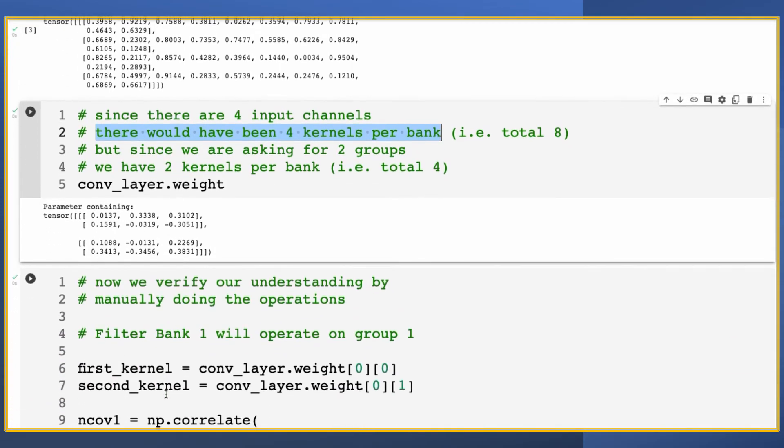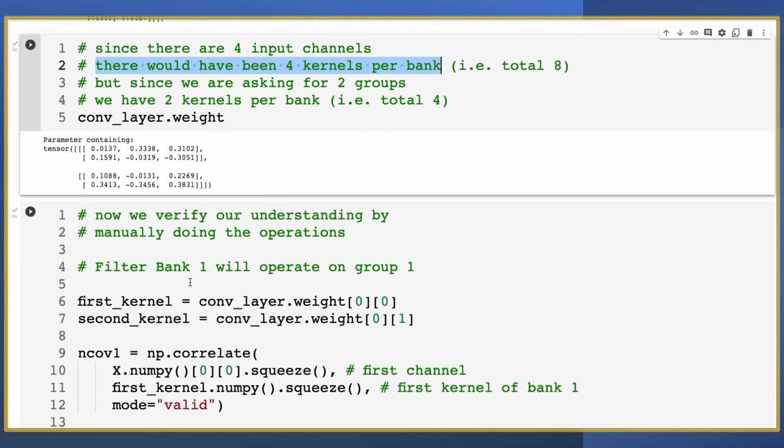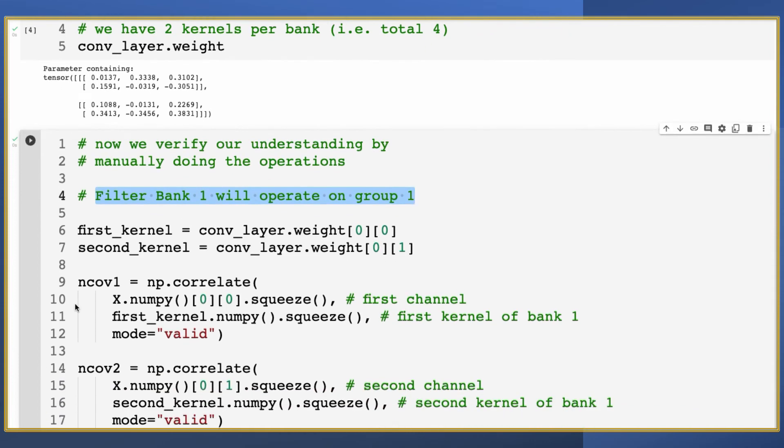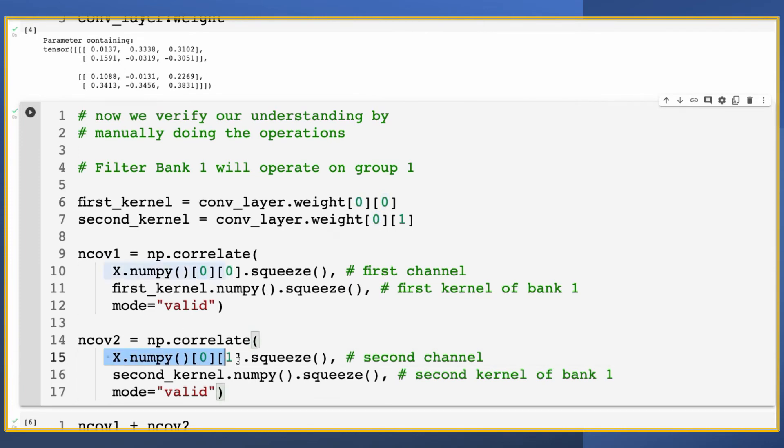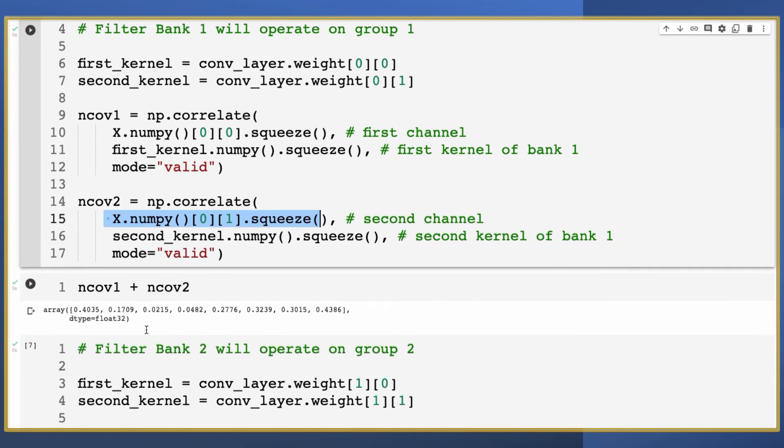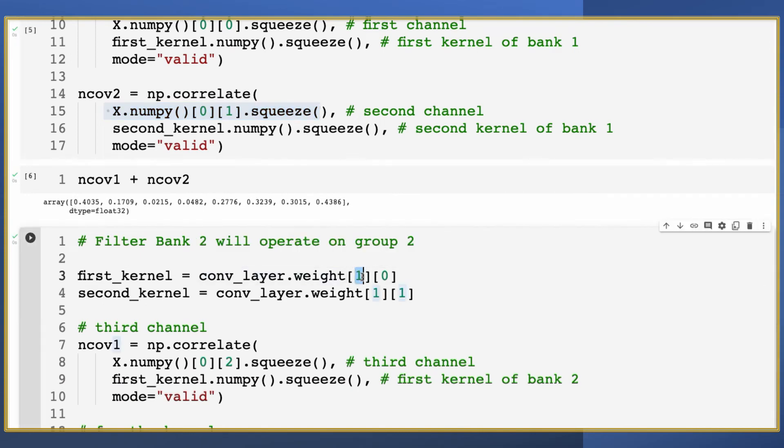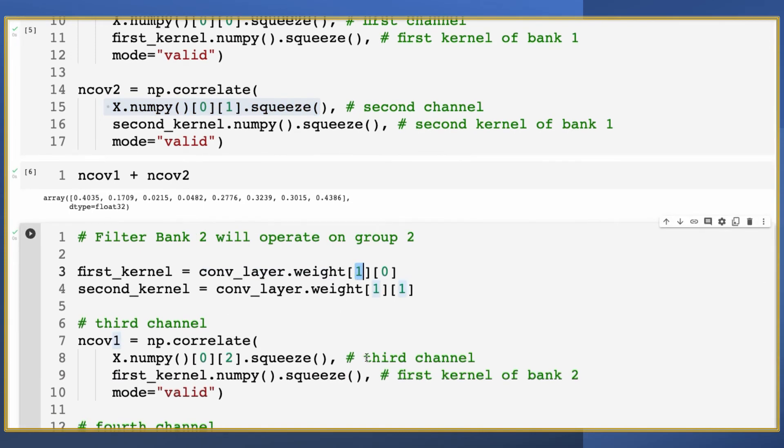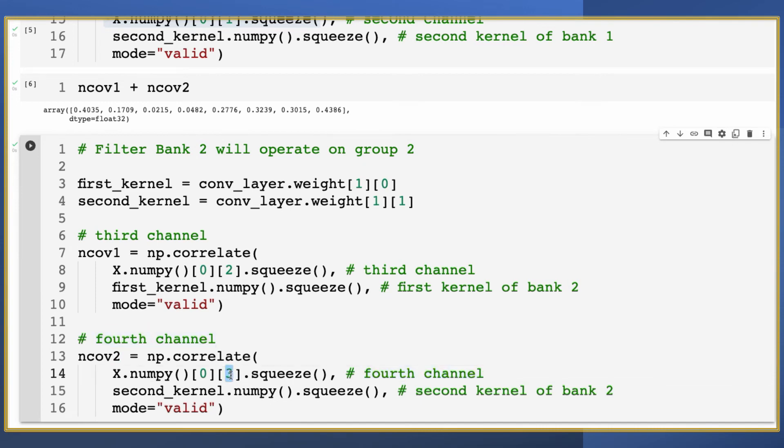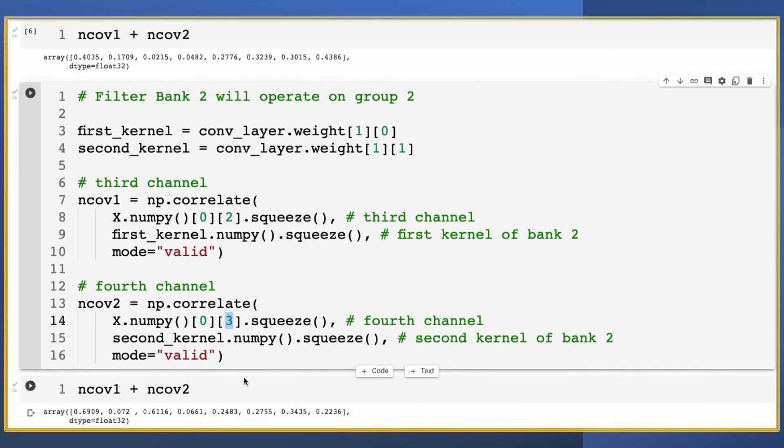Let's now do the correlation operation using numpy API. We will be using the kernel one from bank one with channel one. So first channel, this is the first channel. This is the first kernel from bank one. And similarly, we will be doing it for the second channel, but with second kernel from bank one. And then we will add the feature maps. And here we are using kernel one from bank two with channel three. Look at line number eight. And in next we will do it for the fourth channel. So kernel two of bank two is going to convolve with the fourth channel.